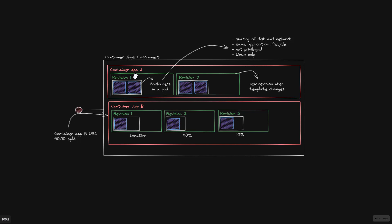When you deploy your containers in such a pod they're automatically deployed in what is called a revision, so you'll get your first revision automatically. You'll also get new revisions automatically whenever the template to your container app changes and you deploy this new template — for instance when you modify the container image or an environment variable you'll get those changes in a new revision. Depending on how you work with revisions, you can have a single revision active at all times or multiple revisions active simultaneously.